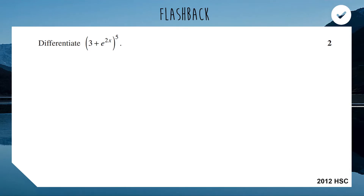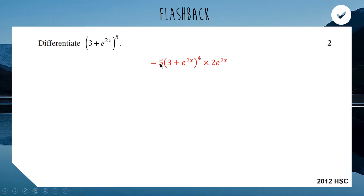Hopefully when you see a function to a high power and we're being asked to differentiate, your initial response should be: I need to be using the chain rule here. So we're going to apply the chain rule. We're going to bring the 5 down the front to multiply, take one off the power, and then multiply our answer by the derivative of what's inside the bracket.